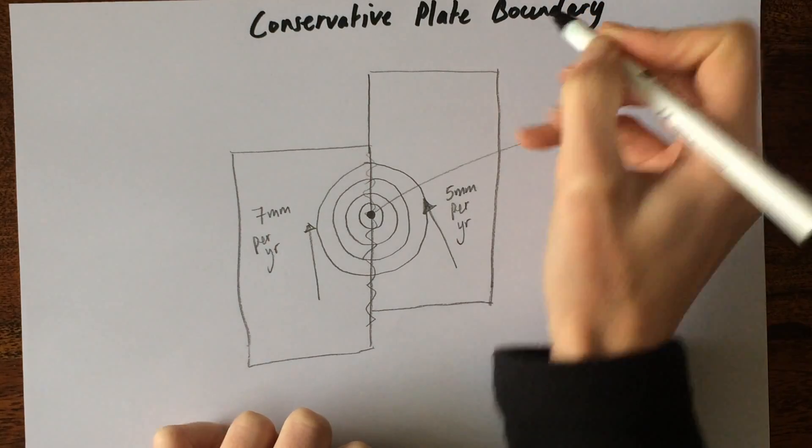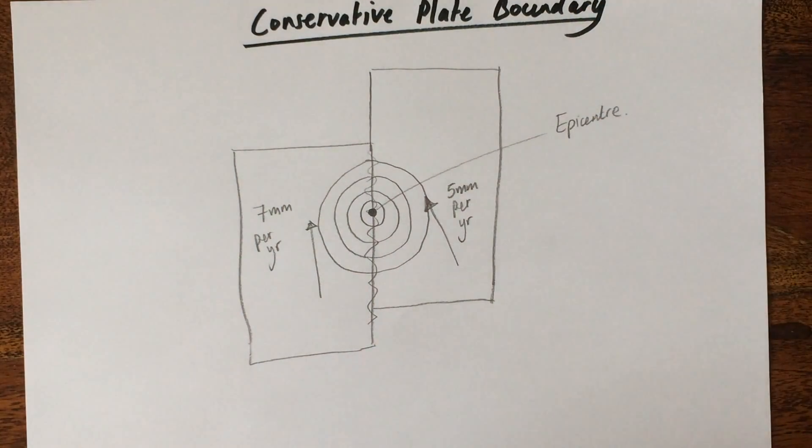You won't get any volcanoes here because, as you can see, there is no gap being created for magma to rise up. There's no subduction into the mantle to create new magma. So you won't get any volcanoes here, but you will get earthquakes and the earthquakes will be violent.